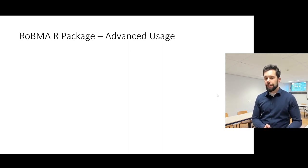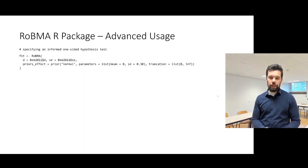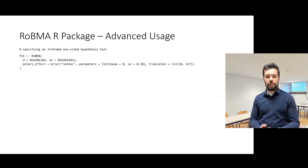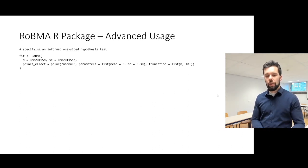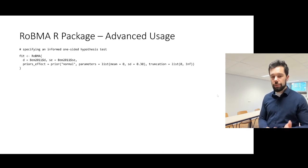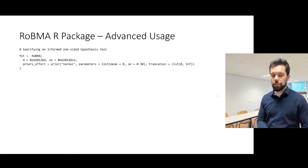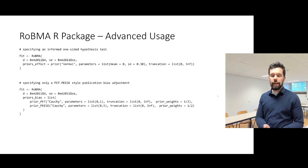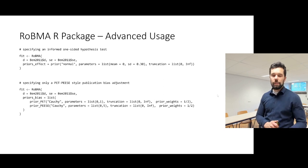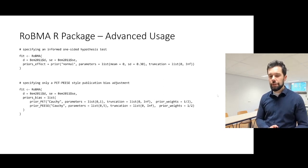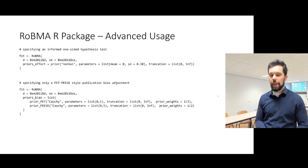A main advantage of the ROBMA package is that you can completely modify the models you want to fit. For example, you can specify a one-sided hypothesis test with a tighter effect size prior, by setting the priors_effect argument in the robma call to a normal distribution with mean 0 and standard deviation 0.3 truncated from 0 to infinity, so all prior density is assigned only to positive values. Alternatively, you can specify only particular publication-bias adjustments — for example, only PET and PEESE models — and combine these with different null and alternative component assumptions.